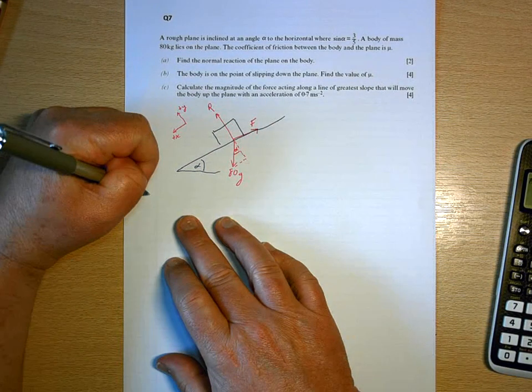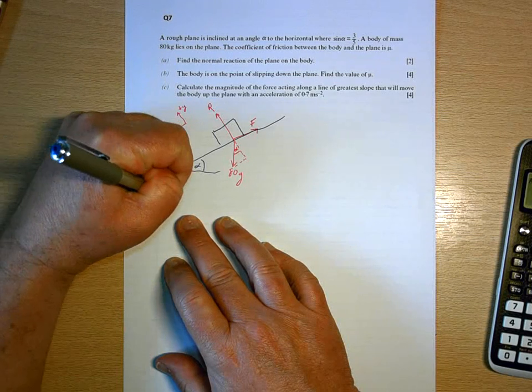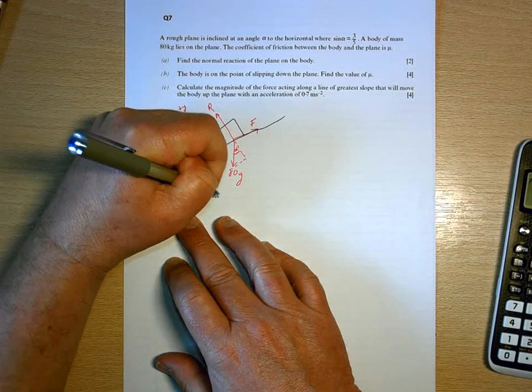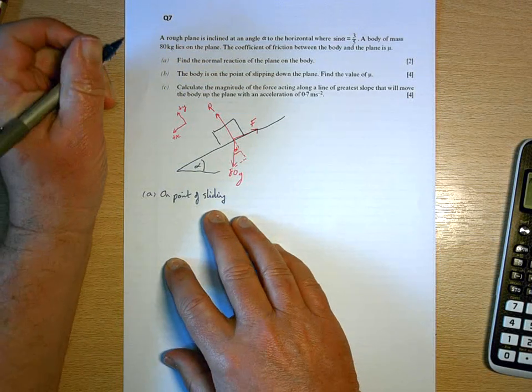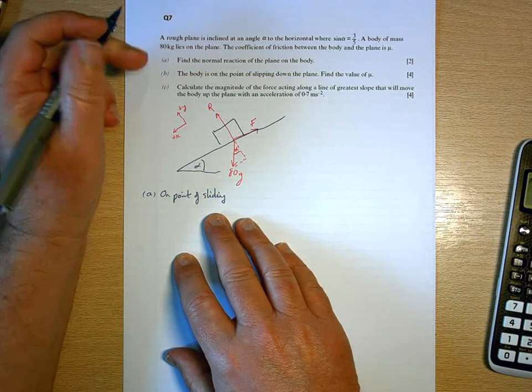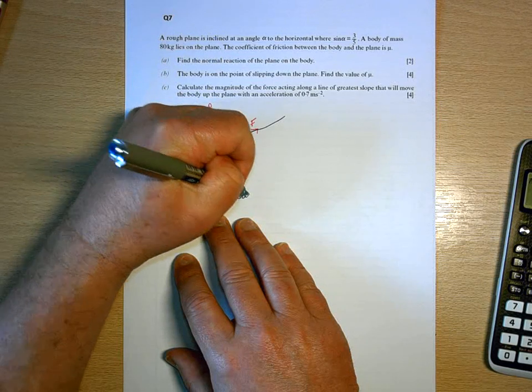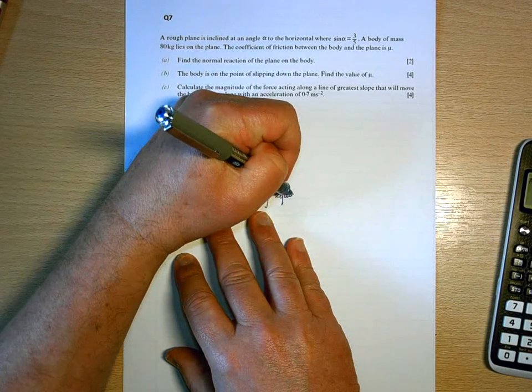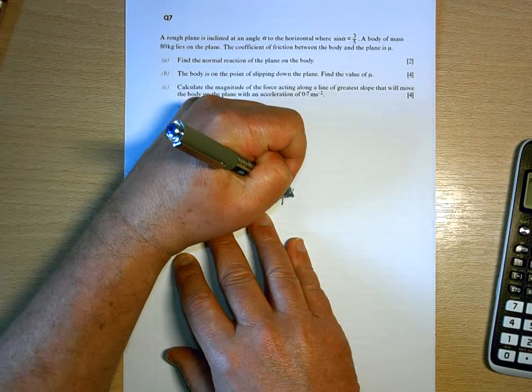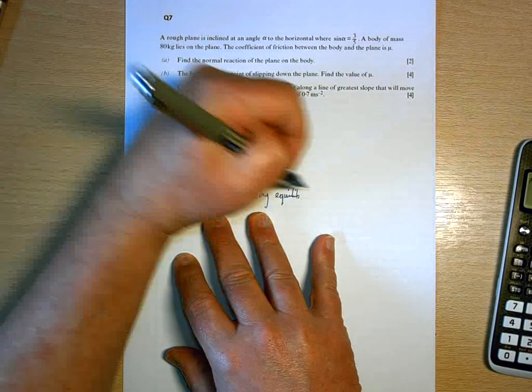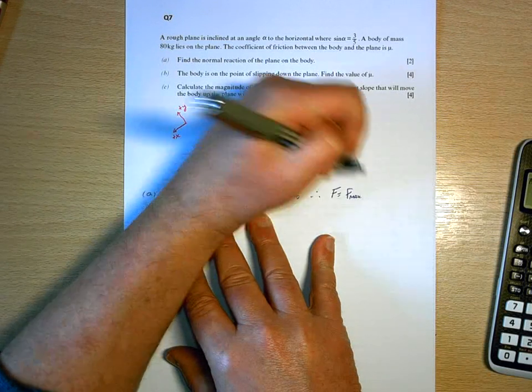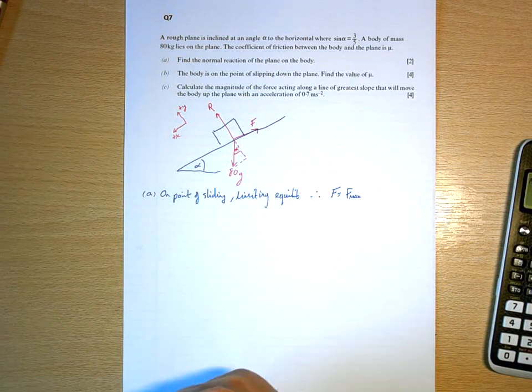On the point of sliding - because it's on the point of sliding, that means we're in limiting equilibrium, and that means that the friction is at its maximum possible value.